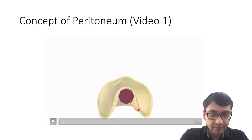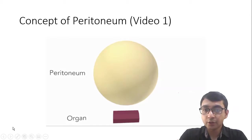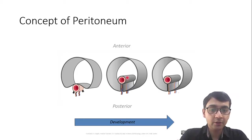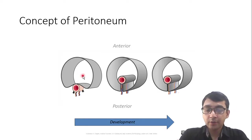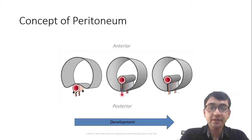Between them is the reflection where the visceral layer of peritoneum becomes continuous with the parietal layer. An important point is that the organ did not actually enter the cavity of the peritoneum — it is technically outside the cavity, but it took a fold of peritoneum with it into the cavity. This fold is the mesentery. The intraperitoneal organ is completely surrounded by the visceral layer of peritoneum and is attached to the wall via the mesentery, which is always two layers and provides a pathway for blood vessels.